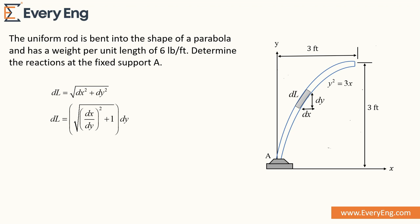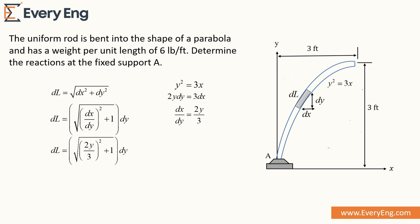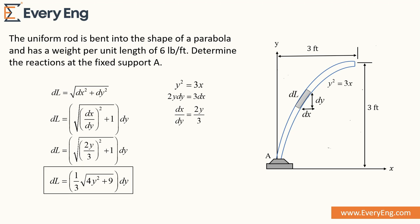Now we are finding dx divided by dy using the parabolic equation. We differentiate this equation and get the value of dx/dy equal to 2y divided by 3. Now we can put this value into the elemental length formula and simplify. This expression gives us the length of the small element.